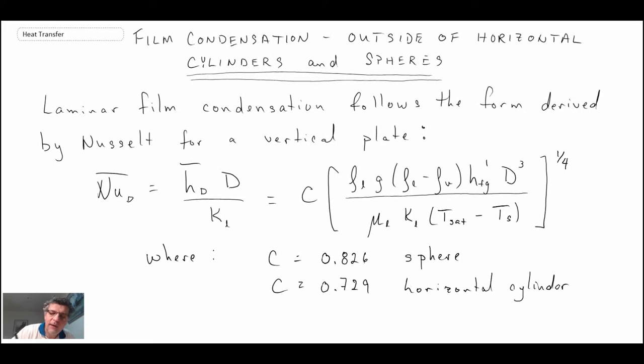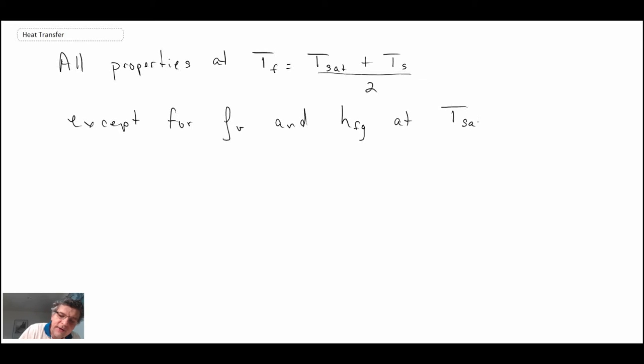We have a modified latent heat of vaporization. That's the one that is corrected using the specific heat of the liquid. And the properties that are evaluated, all properties are at the film temperature. Now, with the exception...